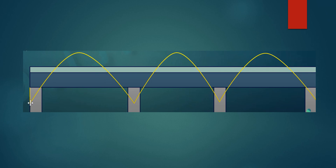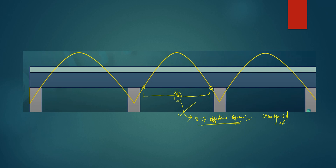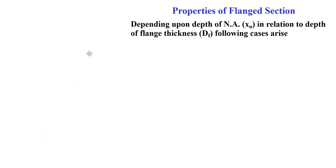Now consider a continuous beam. The bending moment diagram shows that for a particular span, the zero moment points are within the span. The code suggests this distance l₀ as 0.7 times the effective span. The effective span is the clear span plus d, or center-to-center distance between supports, whichever is lesser.